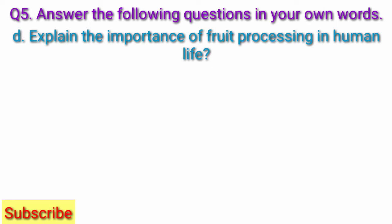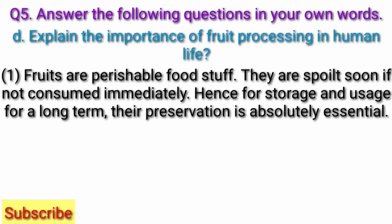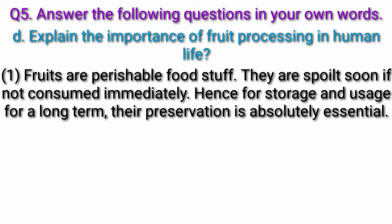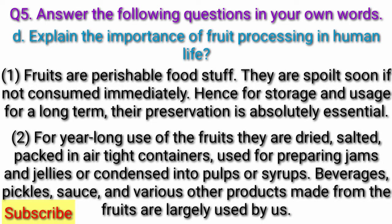Question D: Explain the importance of fruit processing in human life. Answer: Fruits are perishable foodstuff. They are spoiled soon if not consumed immediately. Hence, for storage and usage for a long term, their preservation is absolutely essential. For year-long use of the fruits, they are dried, salted, packed in air-tight containers, used for preparing jams and jellies or condensed into pulps or syrups.